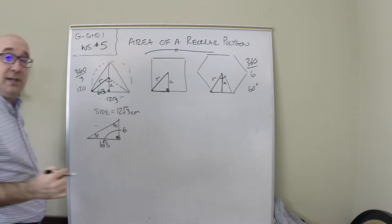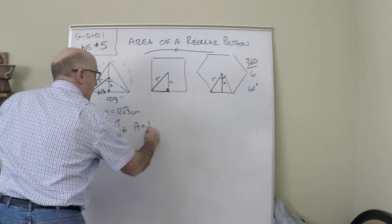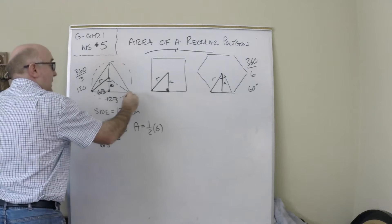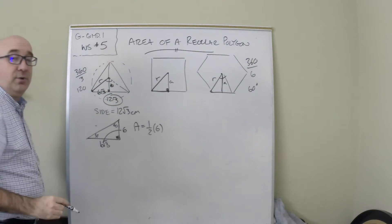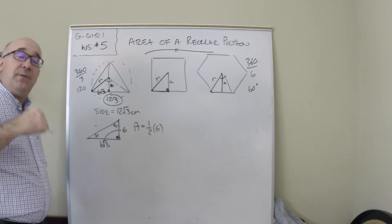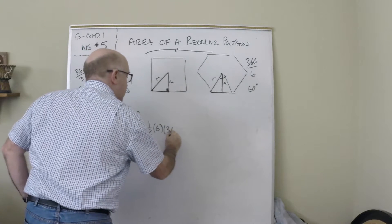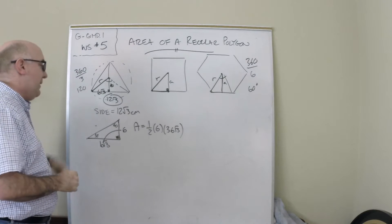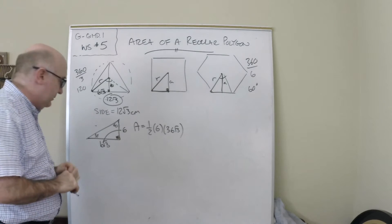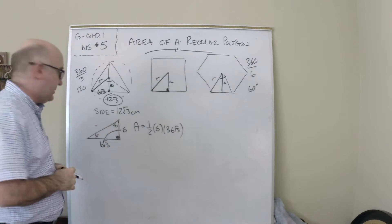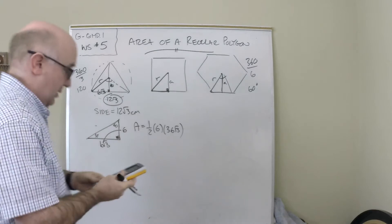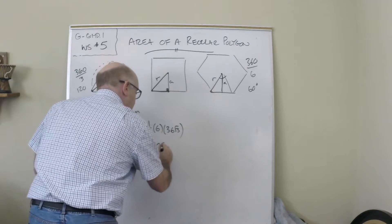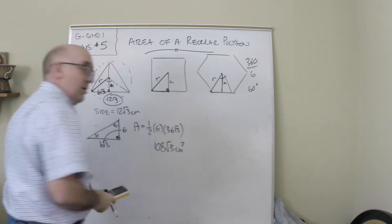The area is one-half the apothem, 6, times the perimeter. One side is 12√3, so if you do that three times you get 36√3. Then it's the multiplication of these values to obtain the answer. We would have a value of 108√3 centimeters squared, apothem times the perimeter of the shape times one-half.